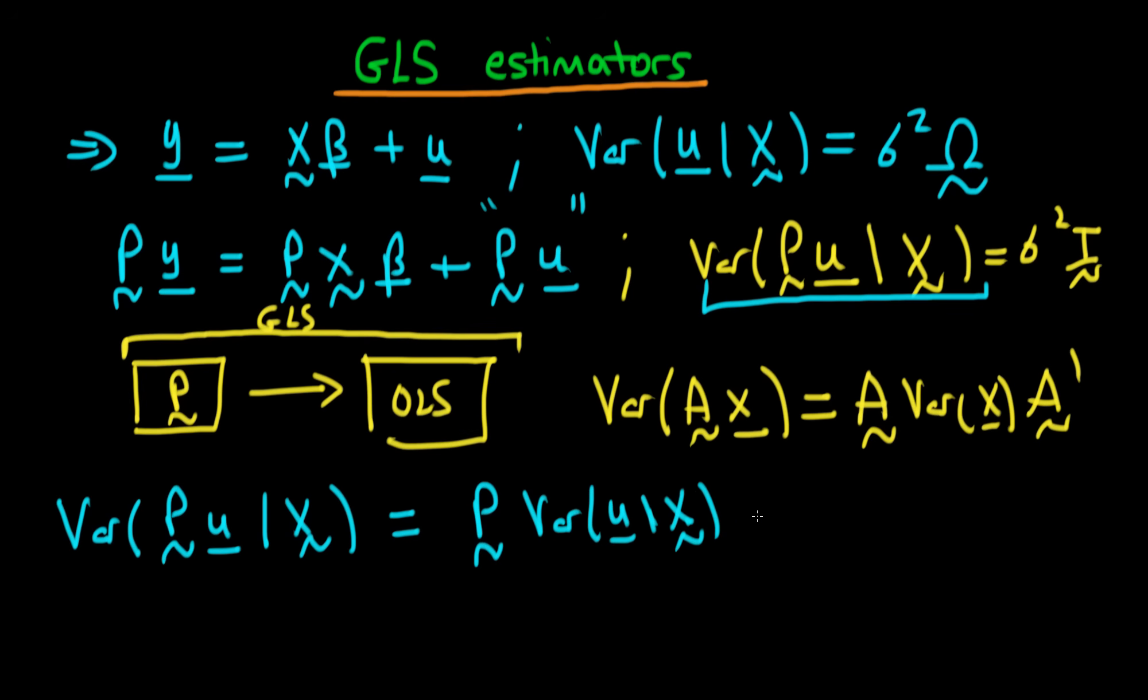And we know what the variance of u given X is. It's just sigma squared times omega. So this is just going to be equal to, we can take the sigma squared outside, sigma squared times P times omega times P prime.